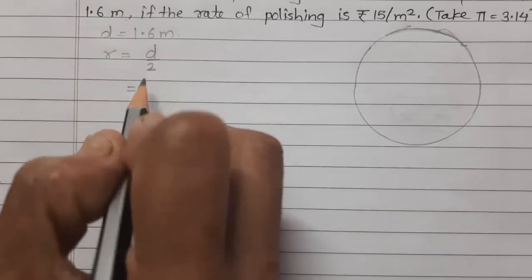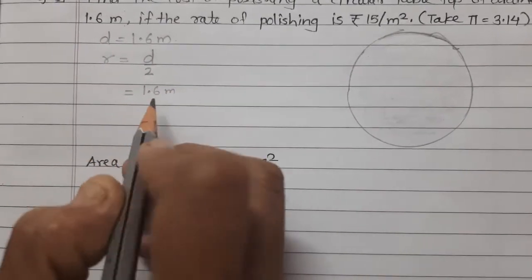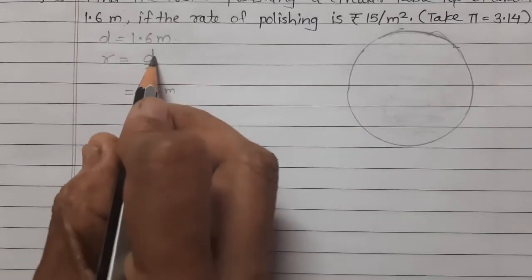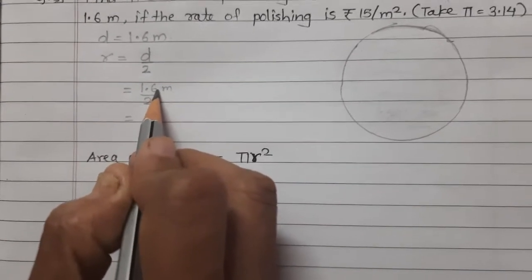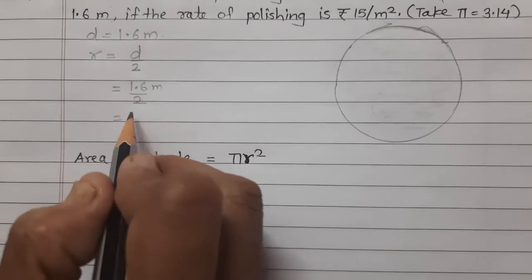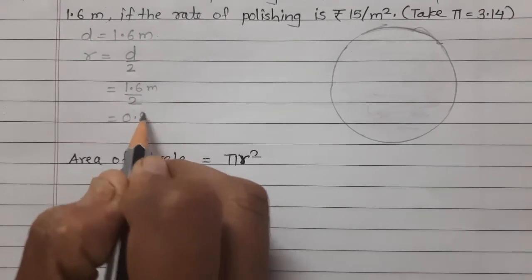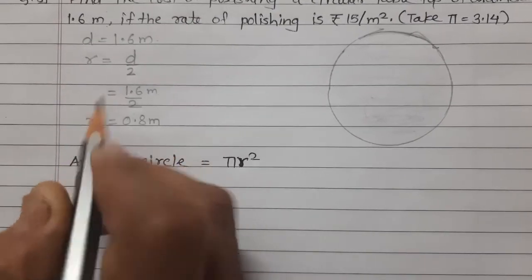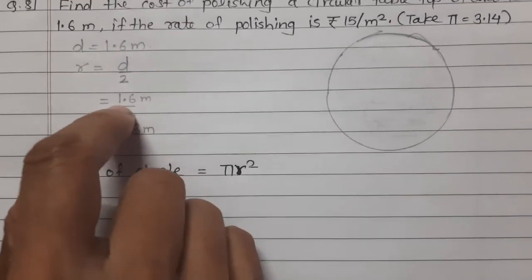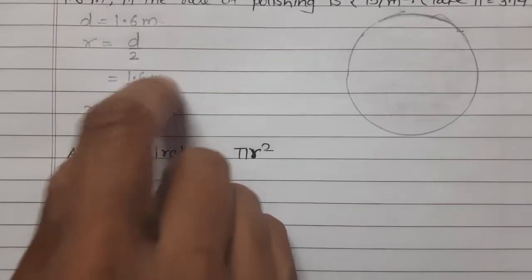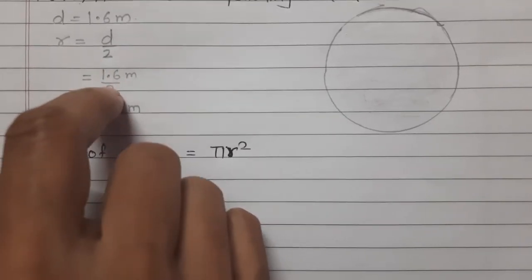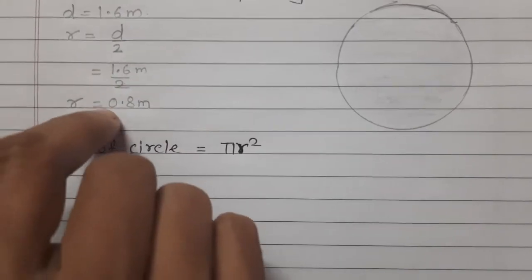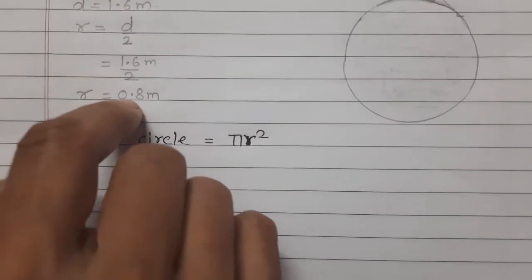Diameter is given as 1.6 meter. So radius equals 1.6 divided by 2, which gives 0.8 meter. So the radius is 0.8 meter.